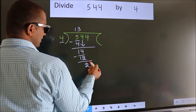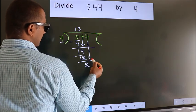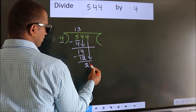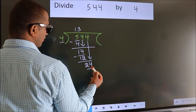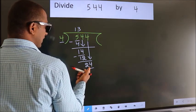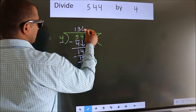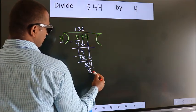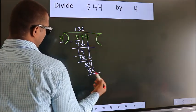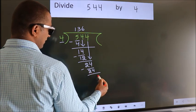After this, bring down the beside number. So, 4 down. So, 24. When do we get 24? In 4 table. 4 6 24. Now, we subtract. We get 0.